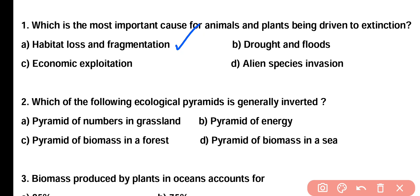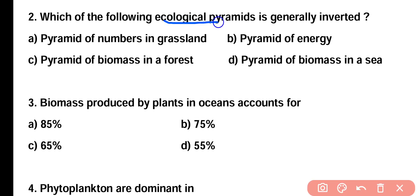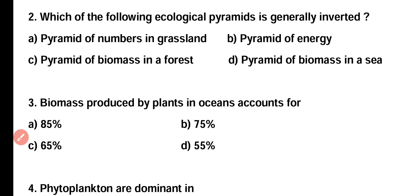Question number two: which of the following ecological pyramids is generally inverted? Pyramid of number in grassland, pyramid of energy, pyramid of biomass in a forest, pyramid of biomass in sea. Correct answer is option D. The pyramid of biomass in an aquatic system is always inverted in shape.